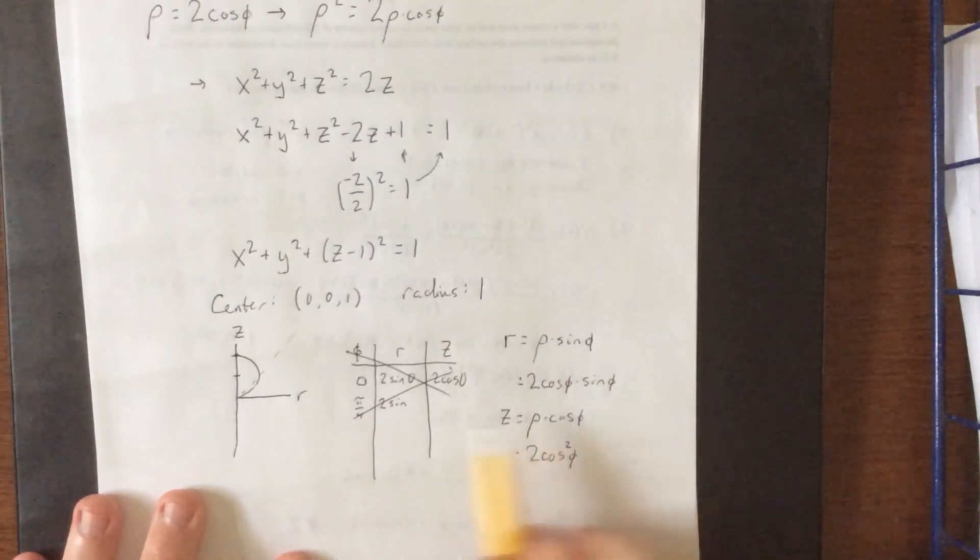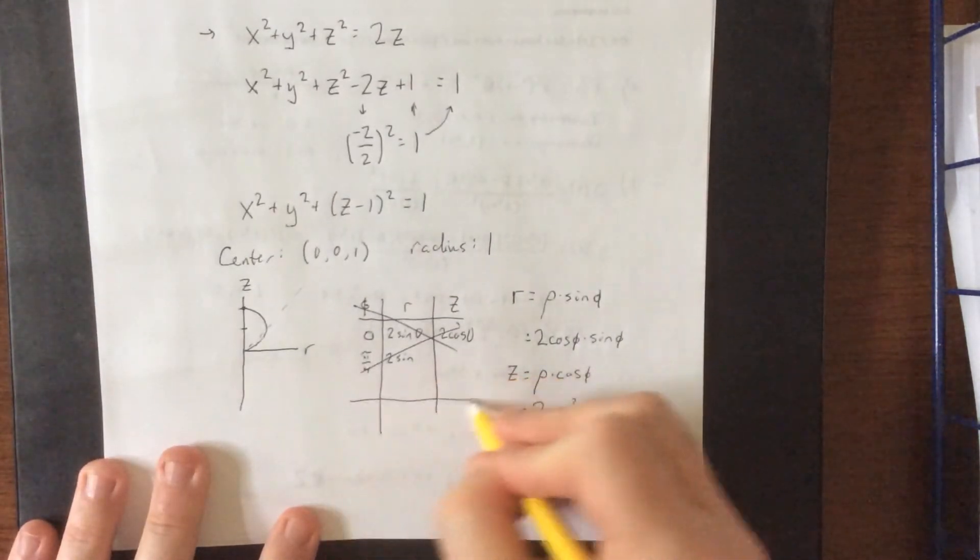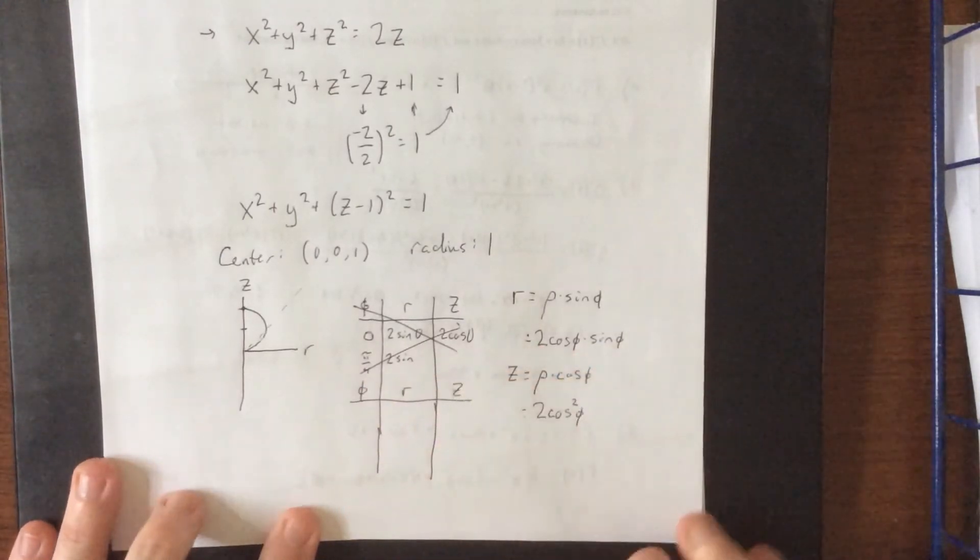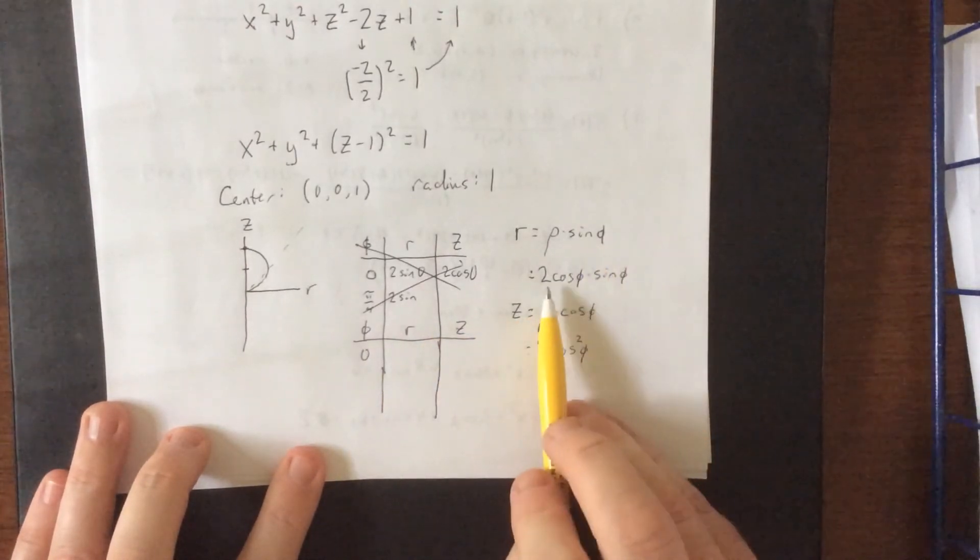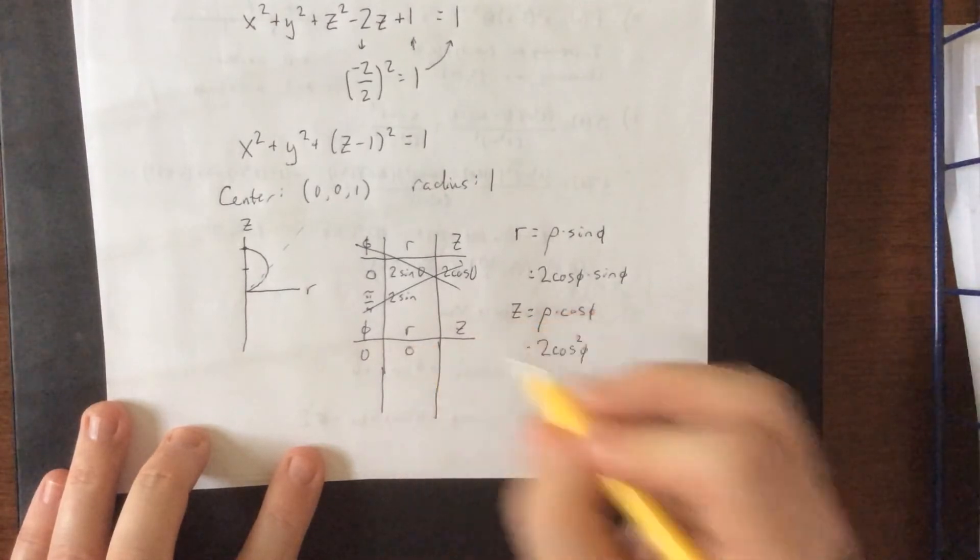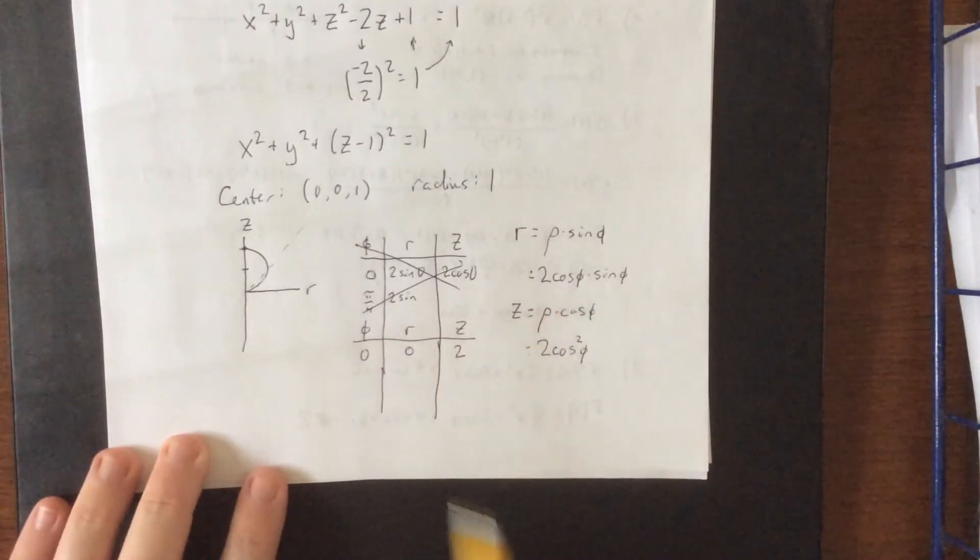If I were using these values over here, it would have worked out more properly. In fact, let's give it the old college try. I'm no quitter except for when I quit things. So when phi is 0, R would once again be 2 times 1 times 0, and z would be 2 times 1 squared. So again, that gives us this point up here at the top.